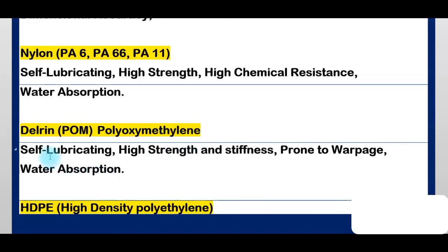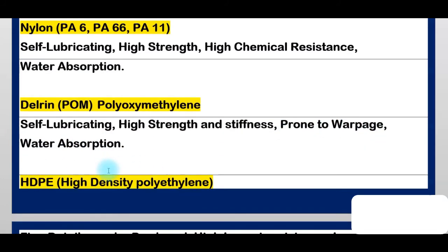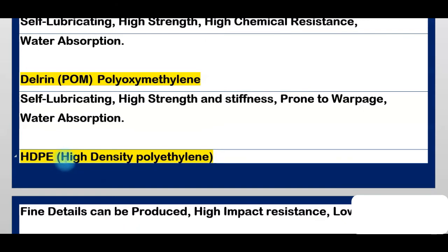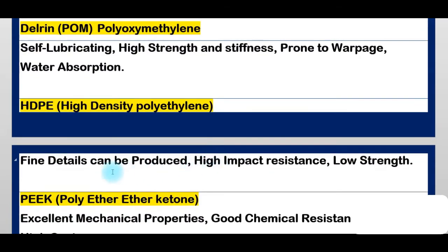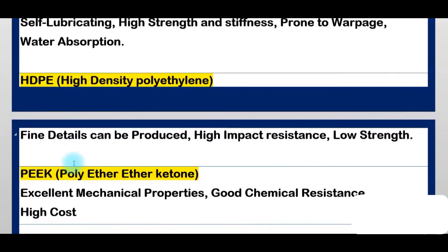Delrin — POM or Polyoxymethylene. Properties: self-lubricating, high strength and stiffness, but prone to warpage and water absorption. HDPE — High Density Polyethylene. Properties: fine details can be produced, high impact resistance, but low strength.